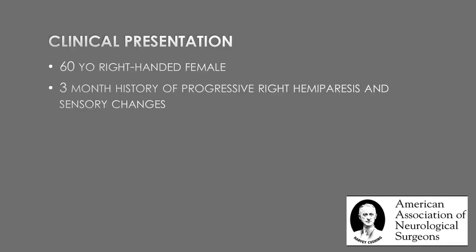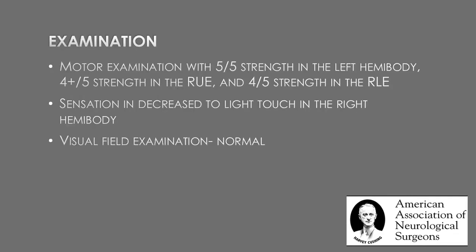The patient is a 60-year-old right-handed female with a 3-month history of progressive right-sided weakness and sensory changes. The examination demonstrated a mild right-sided hemiparesis, more pronounced in the lower extremity than the upper. Also found was a decreased sensation in the right hemibody. Visual field examination did not demonstrate a field cut.